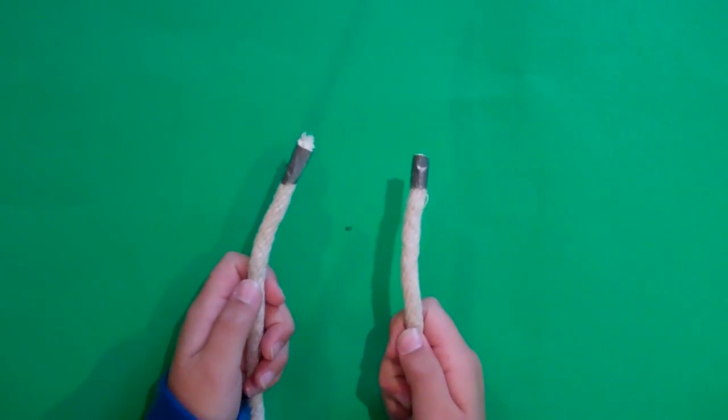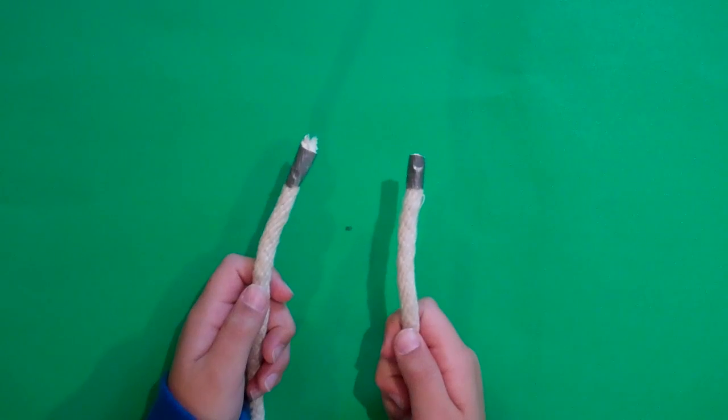The basic idea behind a square knot is right over left, left over right. Let's show you.